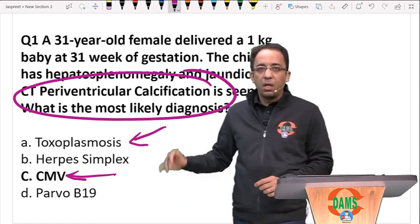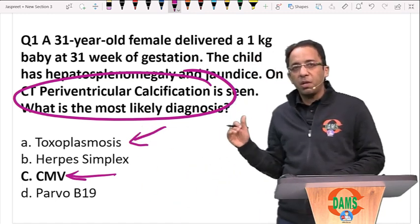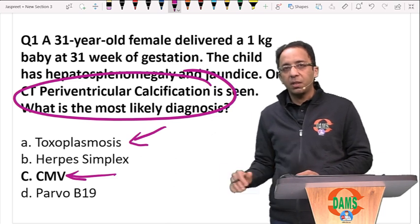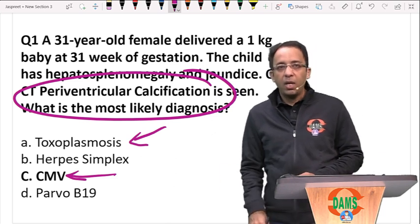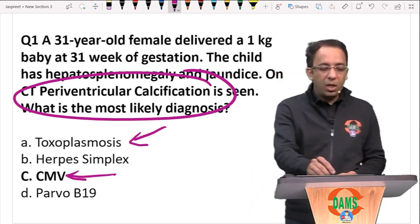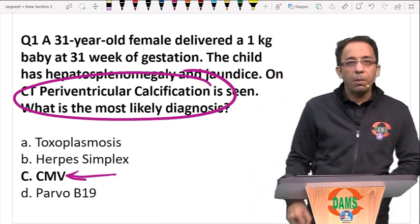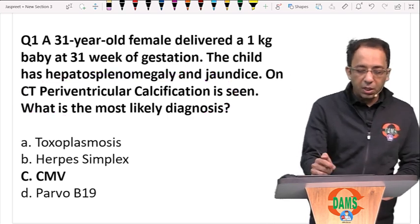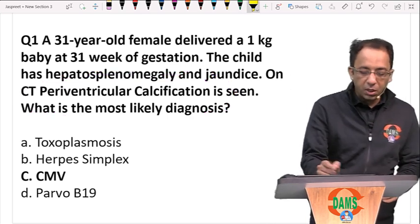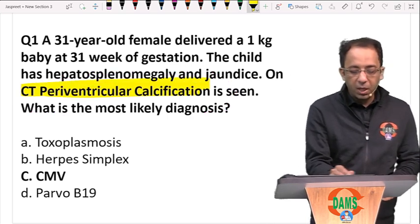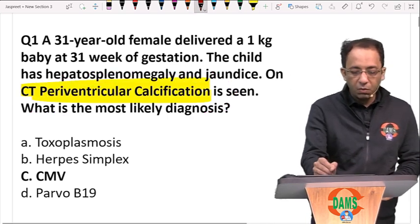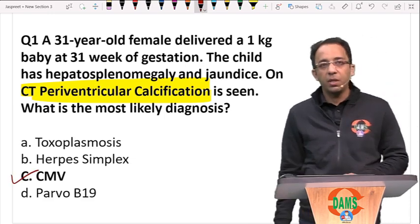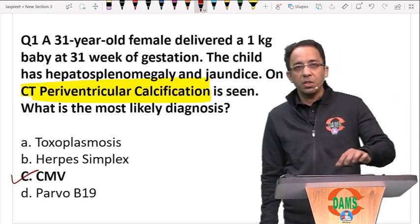The key difference: in toxoplasma, calcification is scattered, while in CMV it is more periventricular. The question specifies periventricular calcification, so the answer is CMV infection.